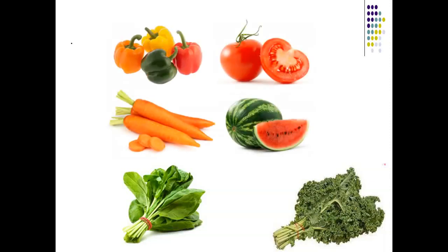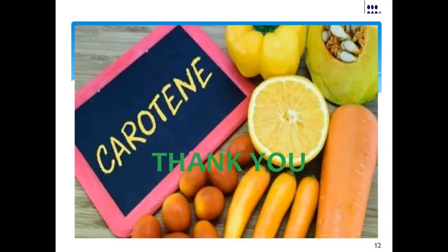Remember whenever your parents told you to eat carrots so you would have good eyesight — please don't consider that a trick to get you to eat vegetables. Now you know very well the role of carrots, as they contain beta-carotene which is important for vitamin A and your body's overall system. You should consume all types of carotenoids. Thank you, hopefully you liked this video — please subscribe and share.